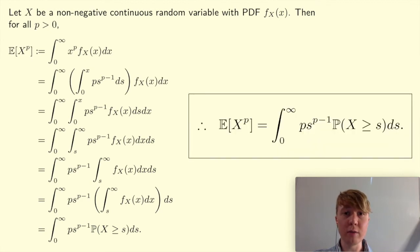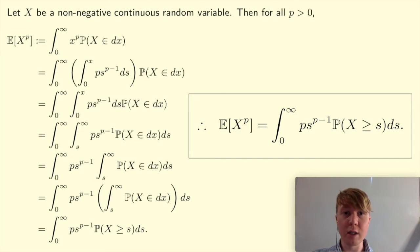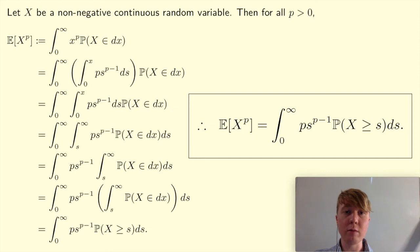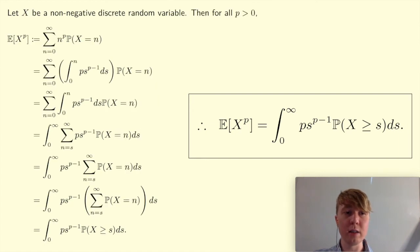So now we've proven this for the continuous case where you've got a pdf. If you want to look at the more general version using measure theory, I've written it with this notation — probability X is in dx — to show that you're integrating with respect to this probability measure, which you might write as dP or dμ. It's the exact same sequence of steps; you apply Tonelli's theorem and get the exact same formula. What's really cool is the more general case with measure theory actually includes the discrete case.